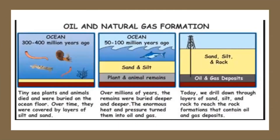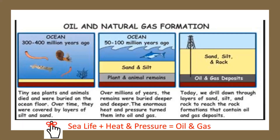Oil and natural gas formation. Over millions of years, tiny sea plants and animals have died and have been buried on the ocean floor. Over time, they are covered with layers of sand and sediment. Over millions of years, they begin to be buried deeper and deeper. And with enormous amounts of heat and pressure, they are finally turned into gas. Today, we use drills to drill through those layers to reach the rock formations that contain the oil and gas deposits. Remember that oil and natural gas formation is formed with sea life plus heat and pressure.